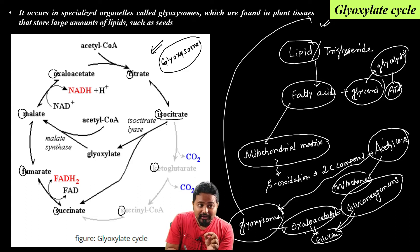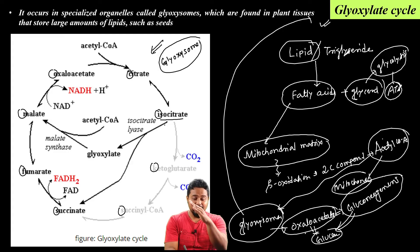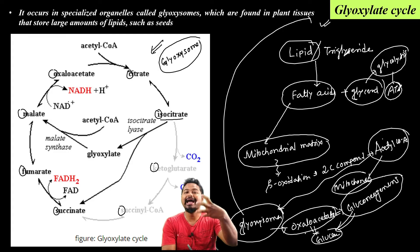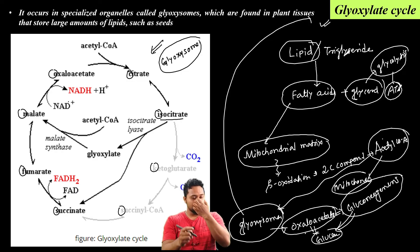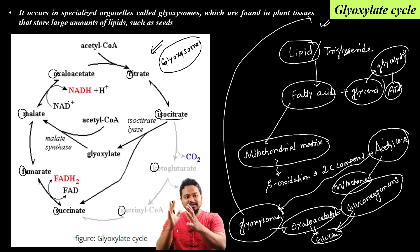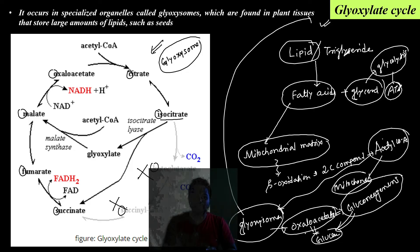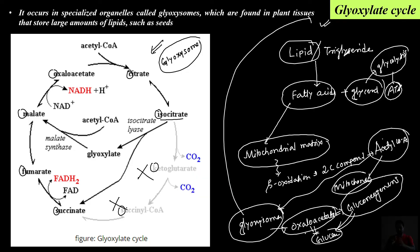Specifically, after isocitrate in the Krebs cycle, the conversion to alpha-ketoglutarate is bypassed. In the glyoxylate cycle, this bypass happens so that alpha-ketoglutarate and succinyl-CoA are not formed.